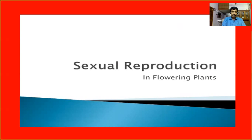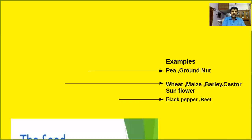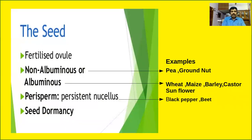You are very familiar — the final product of sexual reproduction in flowering plants is the seed and the fruit. So today, first of all, I am going to discuss some aspects related to seeds. The seed is the final product of sexual reproduction.